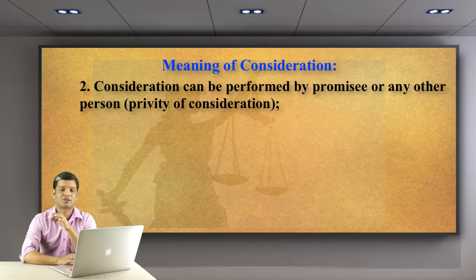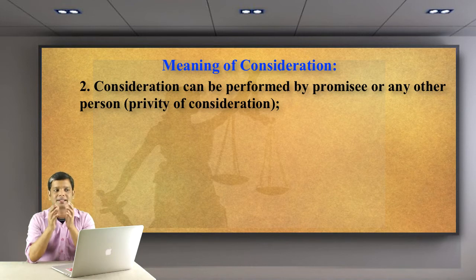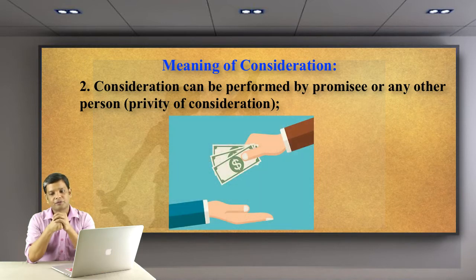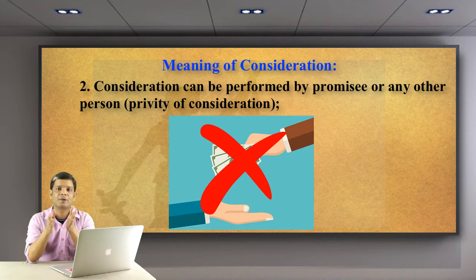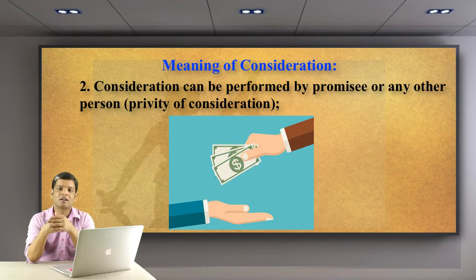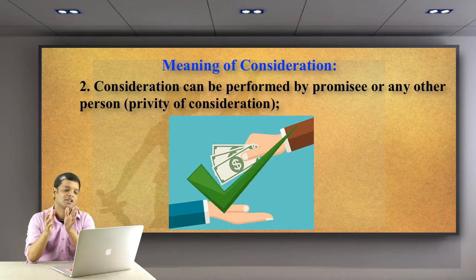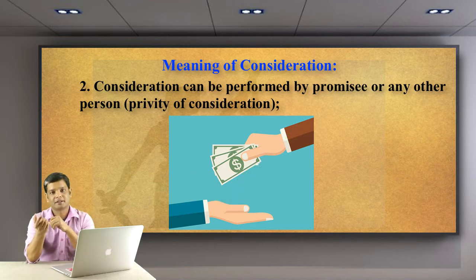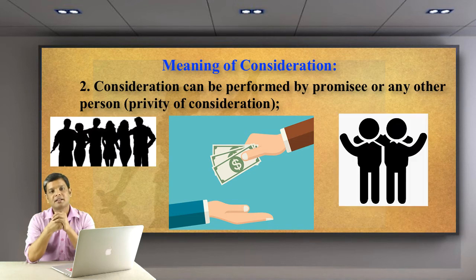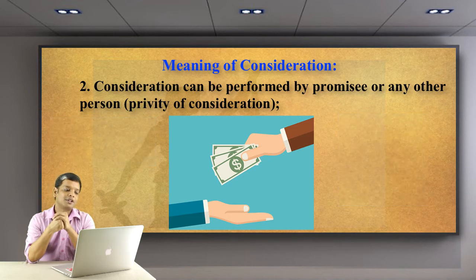What does privity of consideration mean? If you promised to pay a certain amount and you didn't pay, then on your behalf someone else — your relative or friend — paying that amount is acceptable. So it is not only the promisee but any other person who can fulfil the consideration. That is known as the principle of privity of consideration.